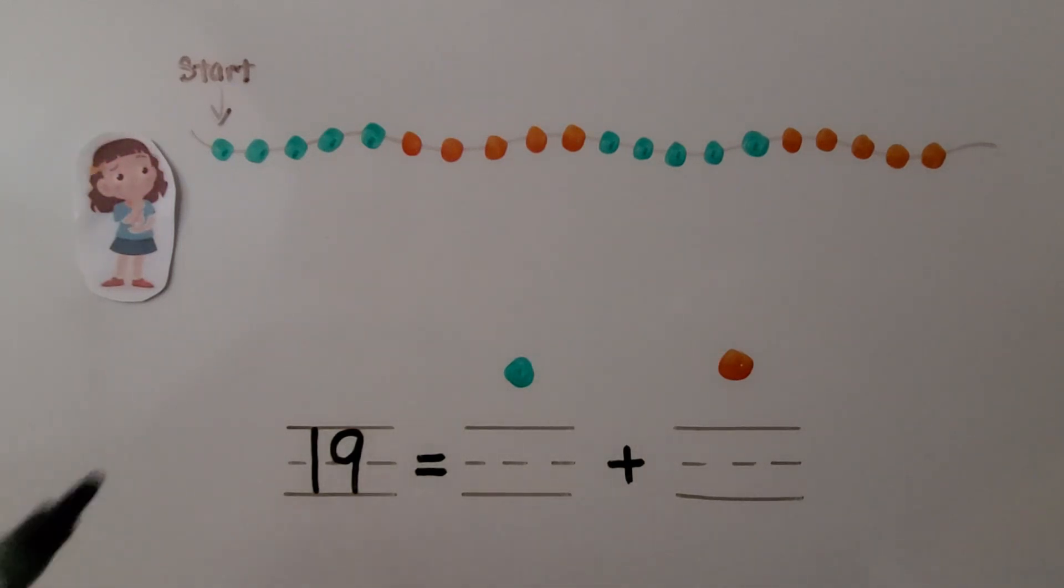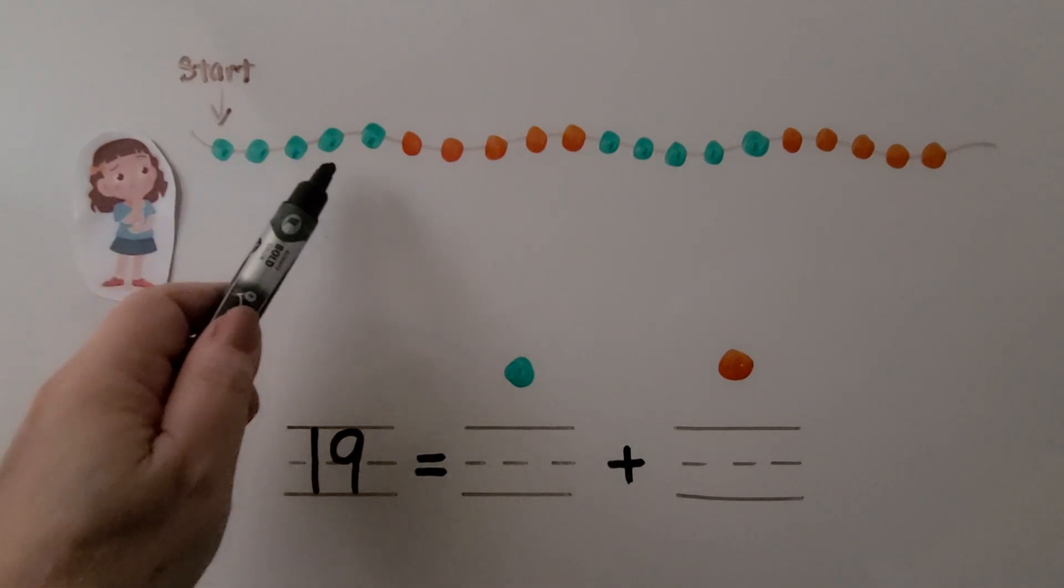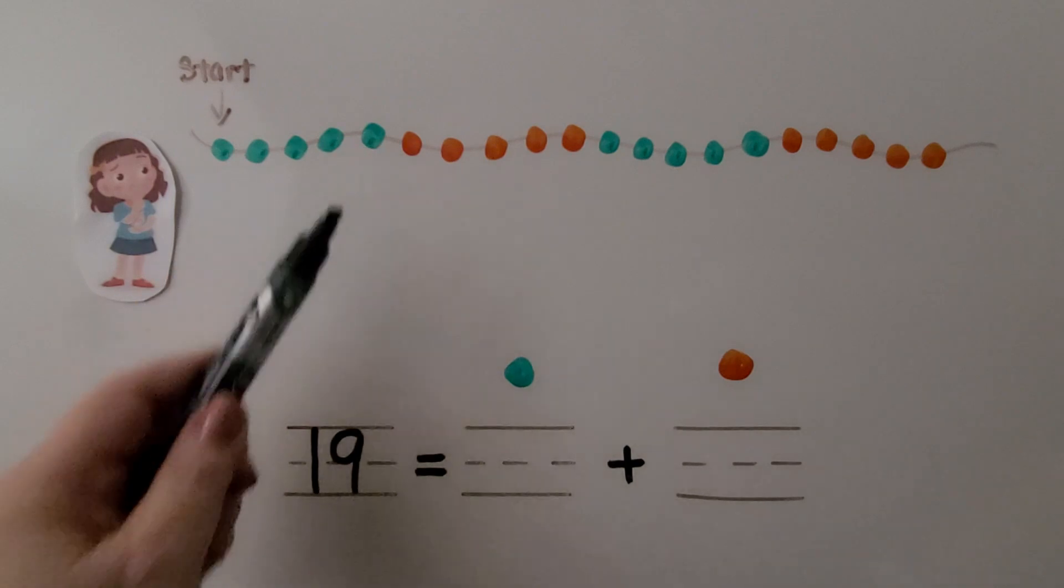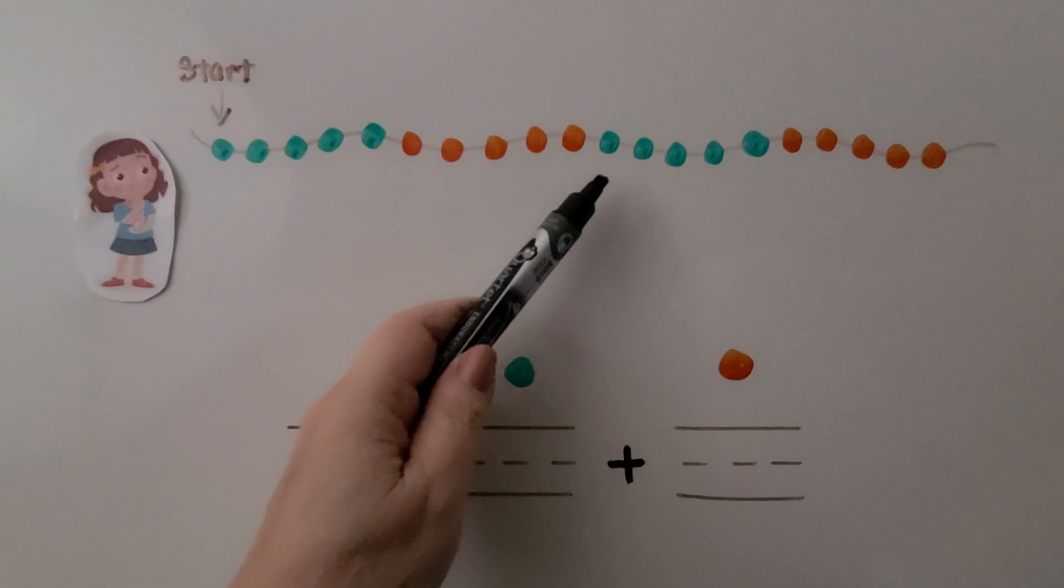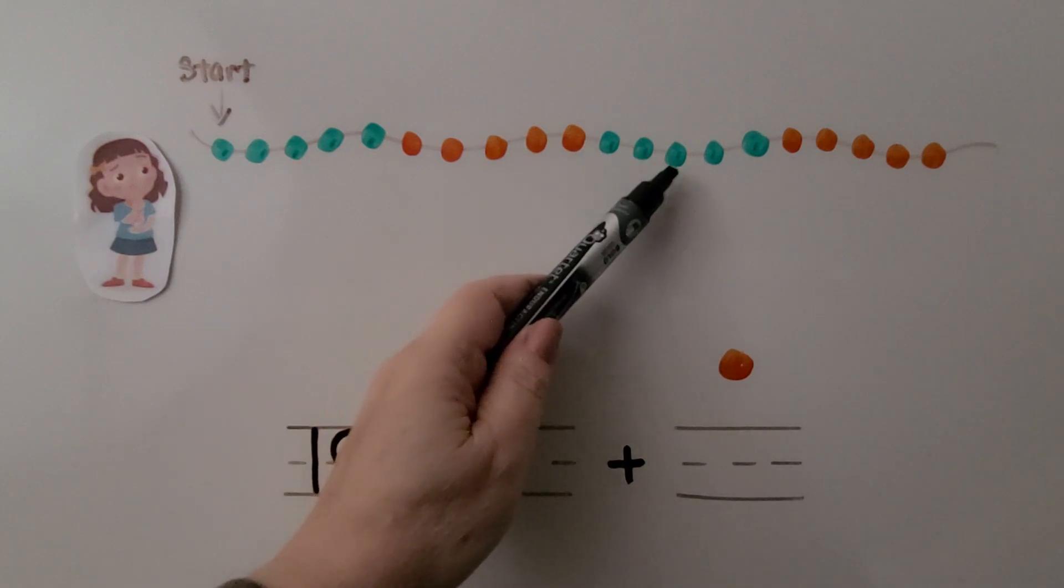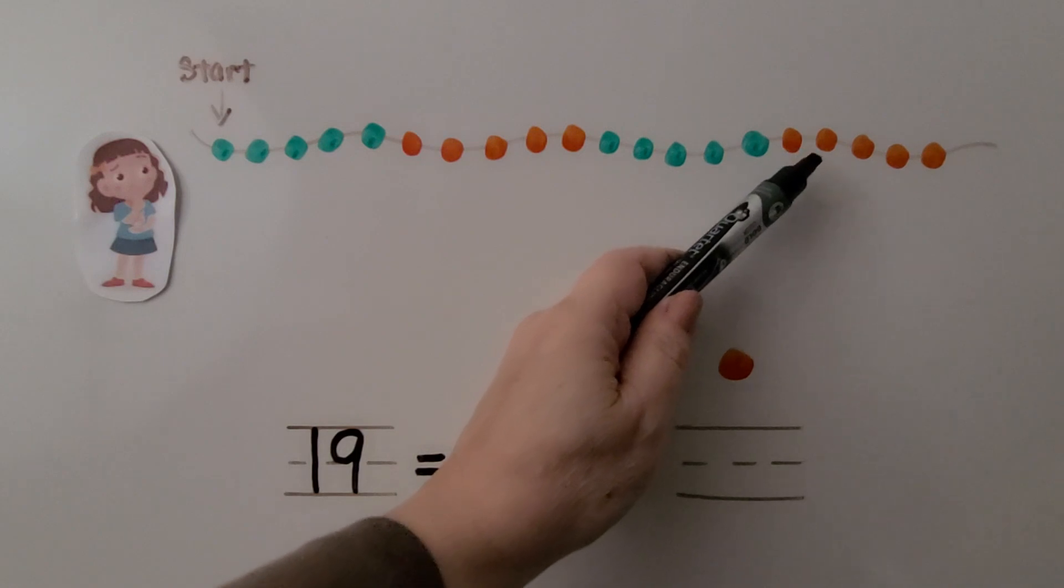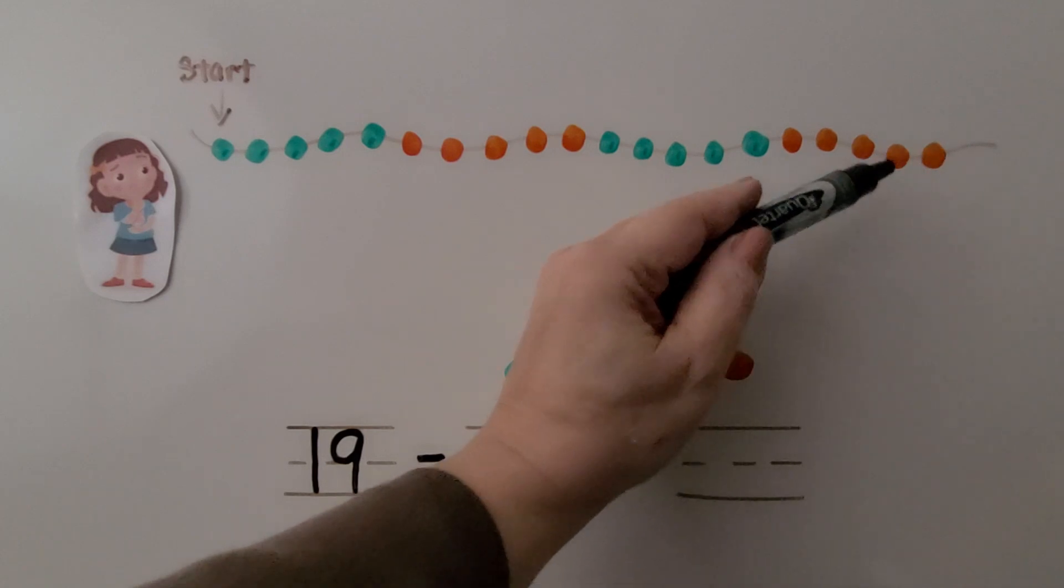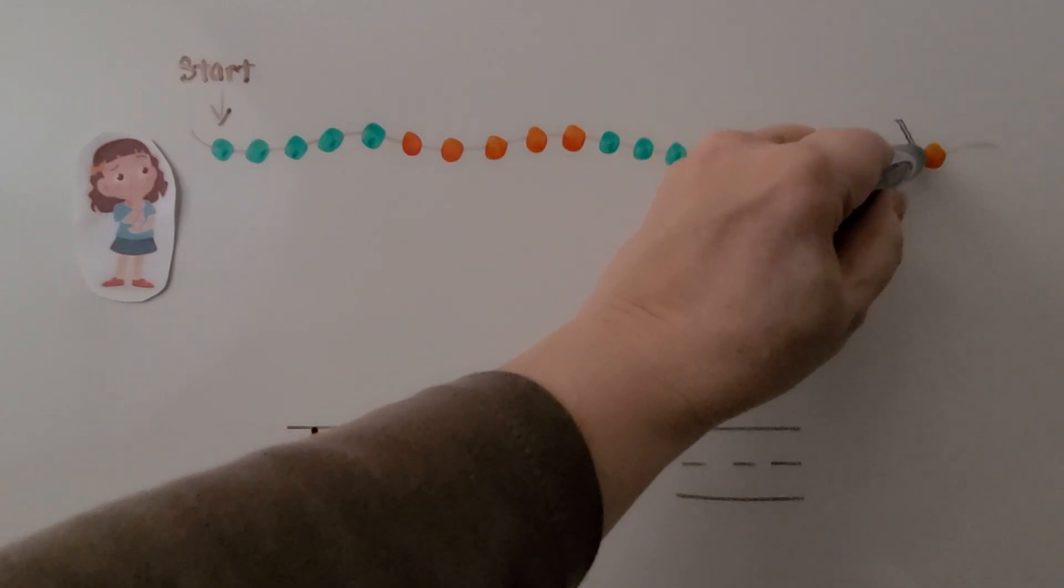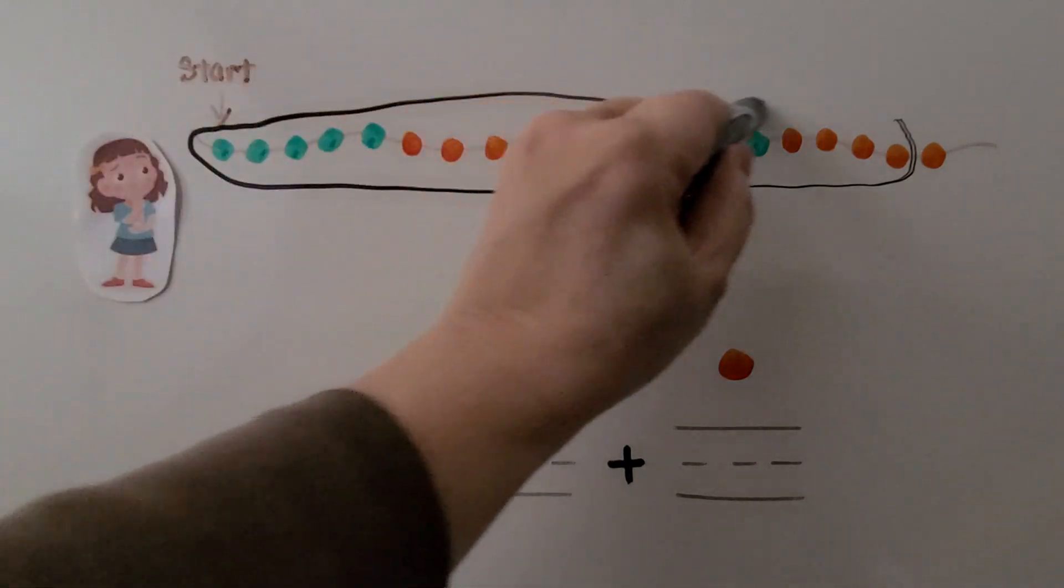We need to circle 19. We have 1, 2, 3, 4, 5, 6, 7, 8, 9, 10, 11, 12, 13, 14, 15, 16, 17, 18, 19. That's number 19. So we need to stop there. That's our circle. We circled 19 beads.